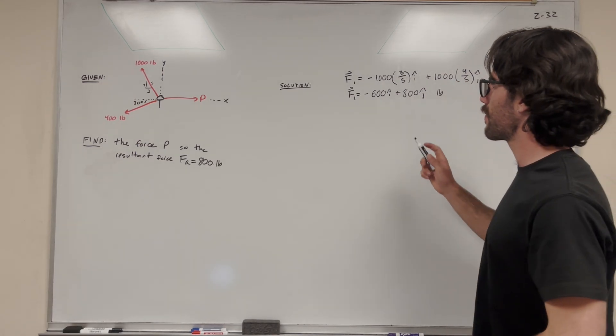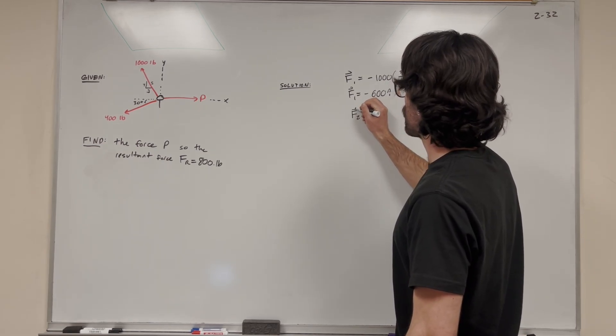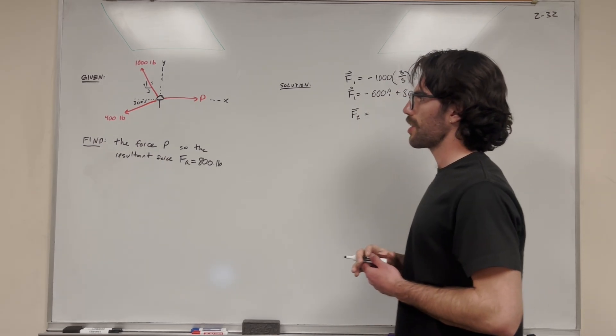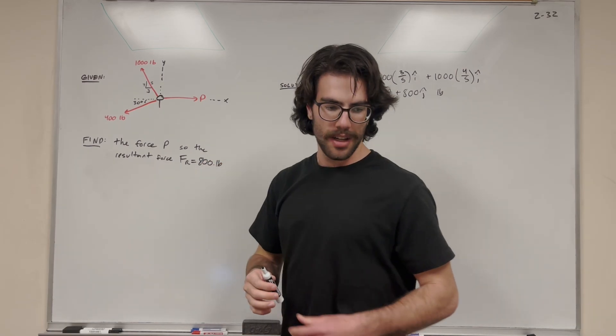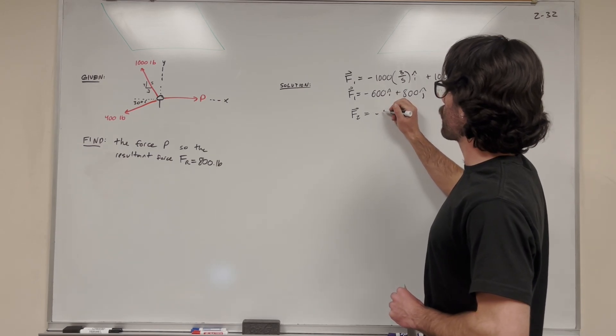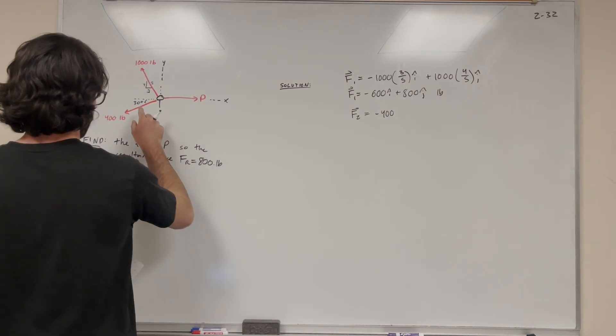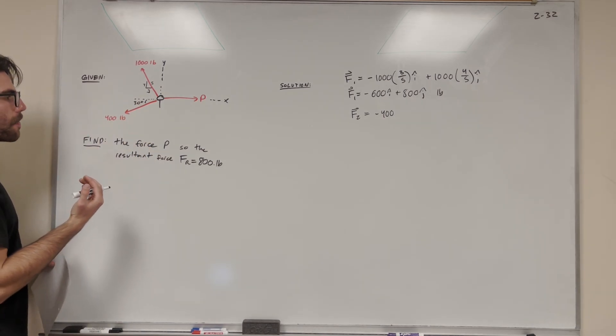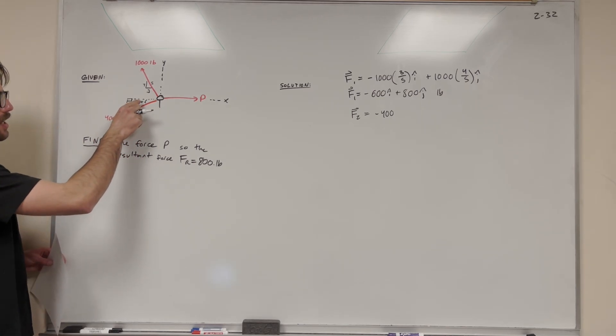Let's find the 400-pound force. Force 2, let's look at quadrant 3. We're going to have a negative x and negative y component. For the x component, we do negative 400. Now we have an angle, 30 degrees, and we're not at a triangle. We can write it as a right triangle. What we're looking for is the x direction, which is adjacent to 30 degrees.